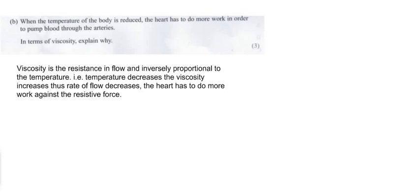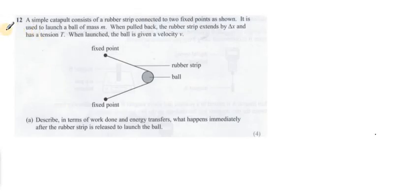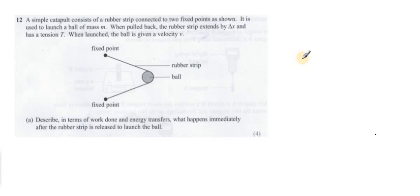Let's see the next question — question number 12. It's all about elastic potential energy, Hooke's law, and strain energy. Question 12: a simple catapult consists of a rubber strip connected to two fixed points, used to launch a ball of mass m.